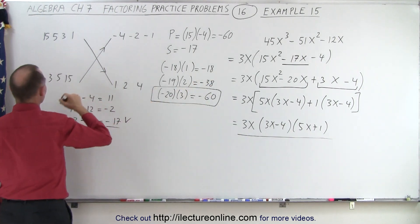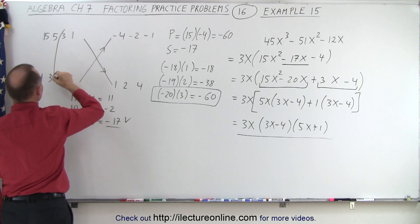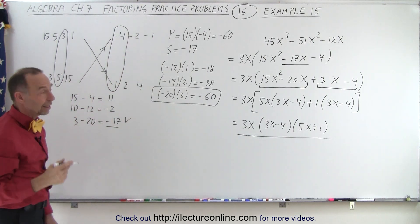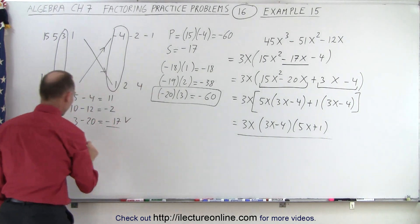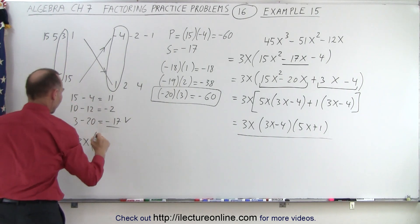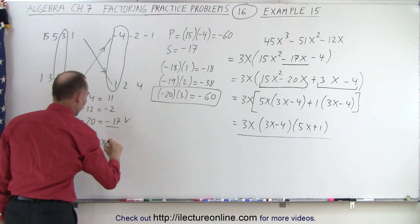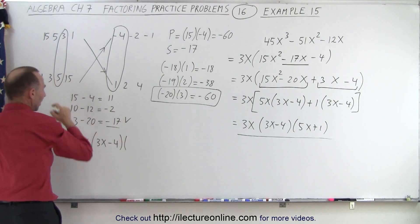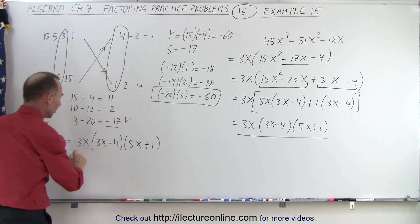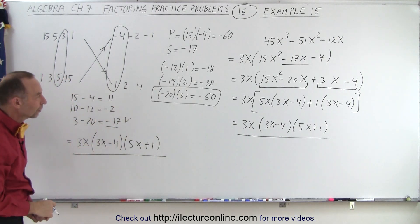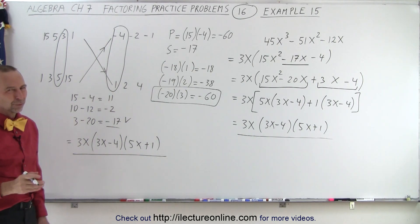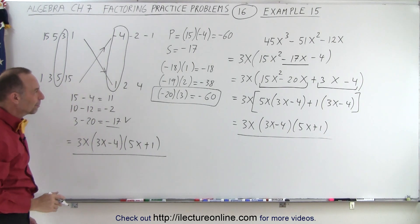I was looking for negative 17, so the correct combination was 3 and 5 on the left, and negative 4 and positive 1 on the right. I can then use that to write up my solution — don't forget the 3x. So this is equal to 3x times 3x minus 4 times 5x plus 1. Notice I have the exact same result using the FOIL method as I did using the other method. It comes down to which method you prefer — the grouping method or the FOIL method. I think most people probably like the FOIL method, although I like the other method as well.